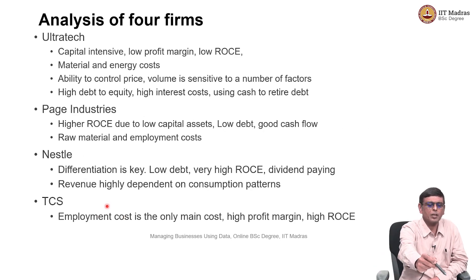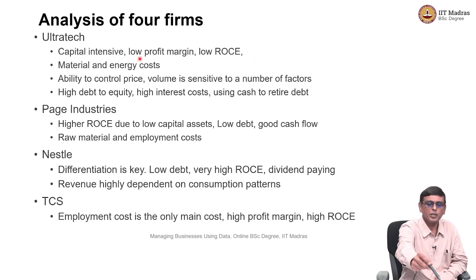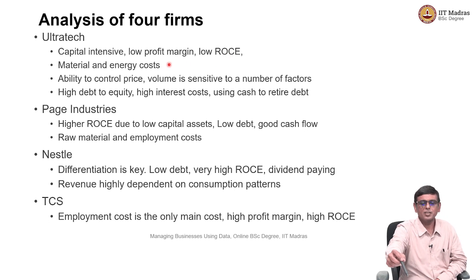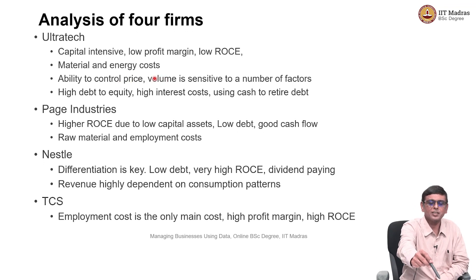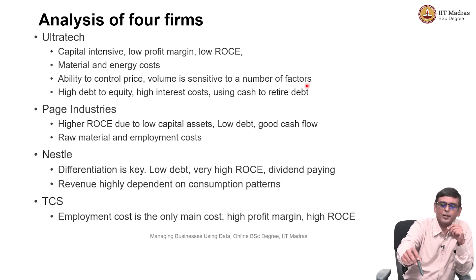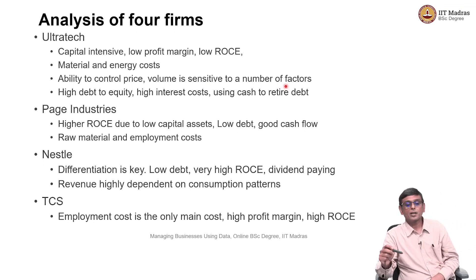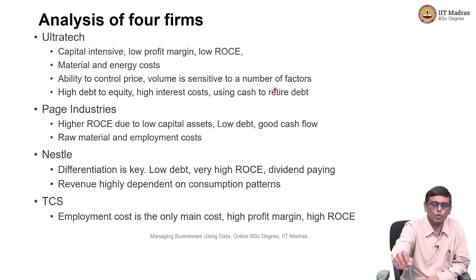Then we looked at four firms: Ultratech, Page Industries, Nestle, and TCS. We saw that Ultratech is a capital-intensive industry with low profit margin and low ROCE. Material and energy costs dominate their cost structure. They are able to control their price — it is an industry that is somewhat cartelized, and the price keeps increasing steadily year over year per bag. However, they do not have much control over volume, and capacity addition decisions are all determined by volume growth.